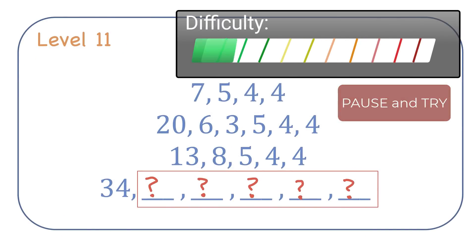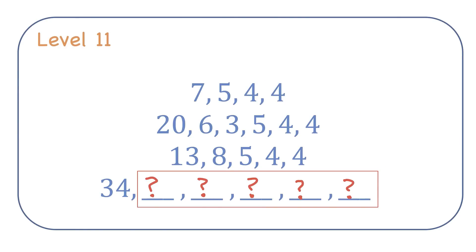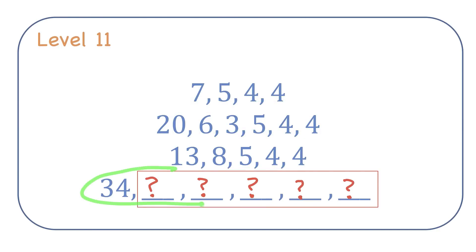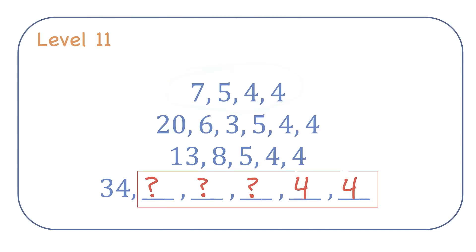Level 11. This one's different — I've given you three sequences of numbers, and there's a relationship between all three that should allow you to find the values missing in the fourth sequence. The first thing that might be obvious is that each sequence ends with two fours, so let's fill in two fours for the last values of this sequence. If you're looking for an arithmetic solution, you're going to be disappointed.